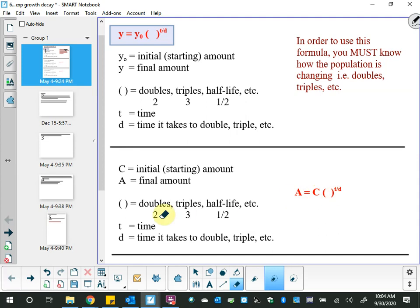In the bracket, you still fit whether it's doubling, tripling, or half-life. You still have the time in question in the numerator of the exponent, and you still have the time it takes to do whatever it's doing in the denominator of the exponent. So we're going to do some questions.